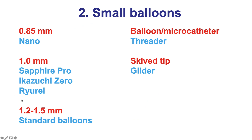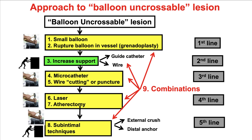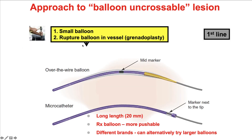Small balloons come in several different types. The smallest one, 0.85 mm, not currently available in the U.S., is the nano balloon. But there is a 1.0 mm balloon in the U.S., the Subfire Pro, and other small balloons from various manufacturers at 1.2 to 1.5 mm diameter, as well as the threader balloon and the glider balloon. Small balloons are the first step when we have a balloon uncrossable lesion — lesions that the wire goes through but the balloon does not follow. Having a small balloon such as the Subfire Pro is the first step, followed by a rupture of this balloon.